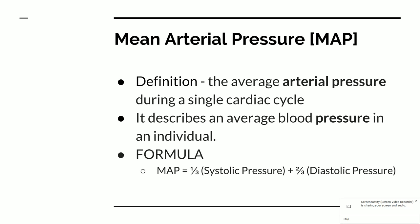Mean arterial pressure, MAP, is the average arterial pressure during a single cardiac cycle. A cardiac cycle is the contraction of the atria followed by the contraction of the ventricles — that's one cycle. It describes the average blood pressure in an individual. The formula for MAP is one-third times the systolic pressure (the top number of the blood pressure) plus two-thirds times the diastolic pressure (the bottom number).